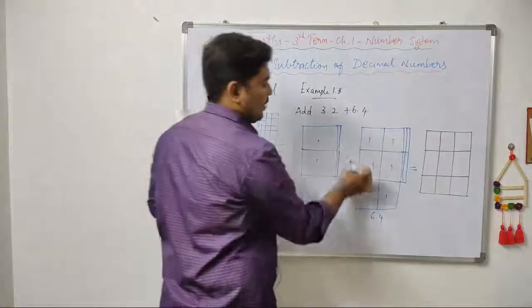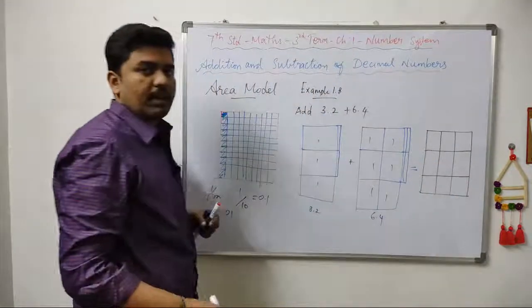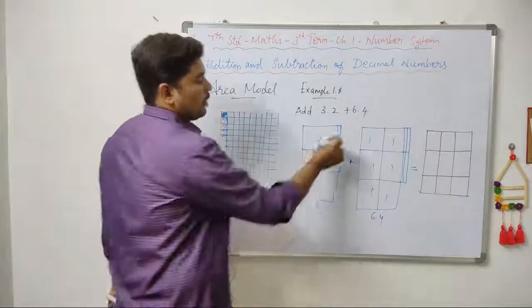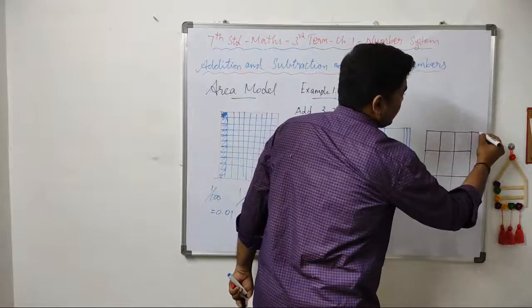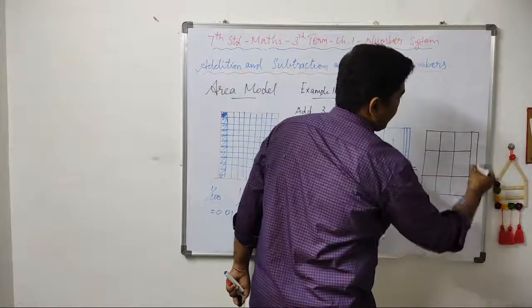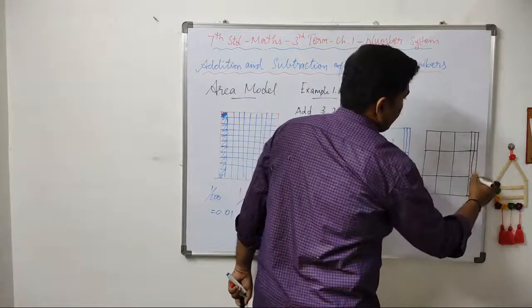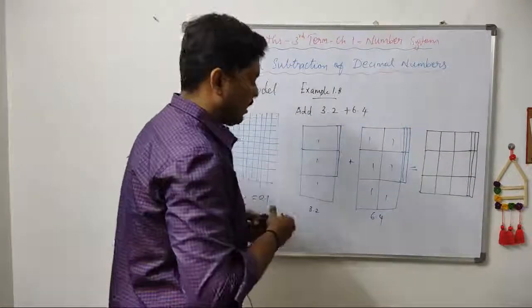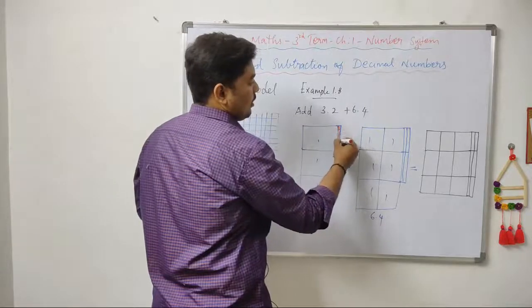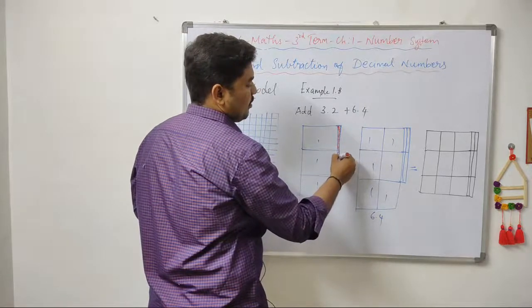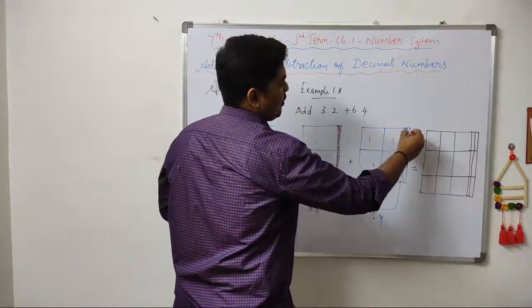Counting again: 1, 2, 3, 4, 5, 6, 7, 8, 9 — 9 whole squares. The 1 by 10th parts are: 1, 2, 3, 4, 5, 6. We can add these. The whole number part and the decimal part together. In the square, 10 is equal to 1 part. This area is 0.01.